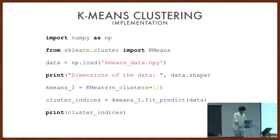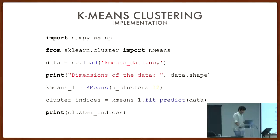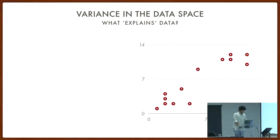The implementation of k-means is extremely simple — you basically import NumPy and k-means from scikit-learn, load your data, and that's it. Now I want to move on to PCA, which is really based on the concept of variance.